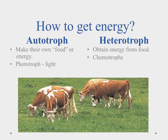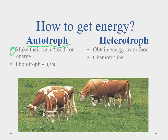One of the big questions for living things is how do you get your energy to live? We have two basic ways. The first is you can be an autotroph — autotrophs are able to make their own food or get their own energy. Many of these are phototrophs, which means they use light to get and convert this energy.